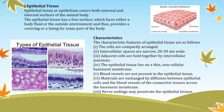Adjacent cells are held together by intercellular junctions. The epithelial tissue lies on a thin non-cellular basement membrane. Blood vessels are not present in the epithelial tissue — we do not see blood vessels on our skin, which is a type of epithelial tissue. Materials are exchanged by diffusion between the epithelial cells and the blood vessels of the connective tissue across the basement membrane. The blood vessels lie below the basement membrane, and transportation and exchange of material takes place by diffusion through the basement membrane.